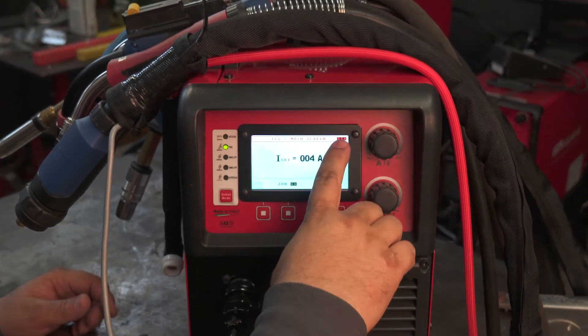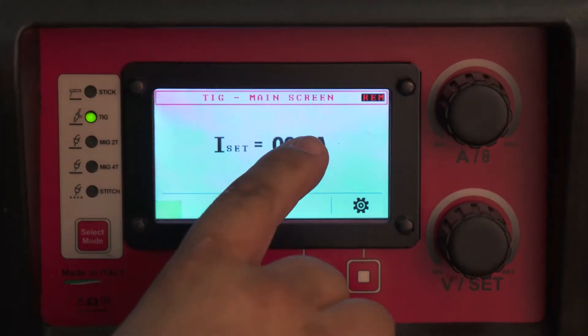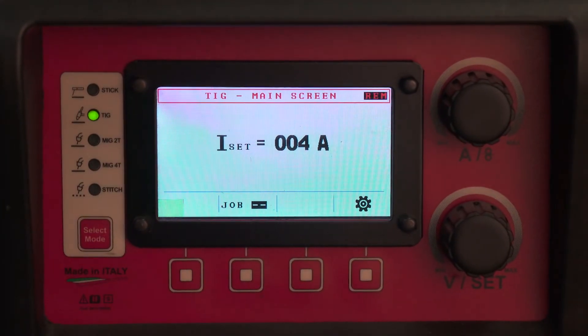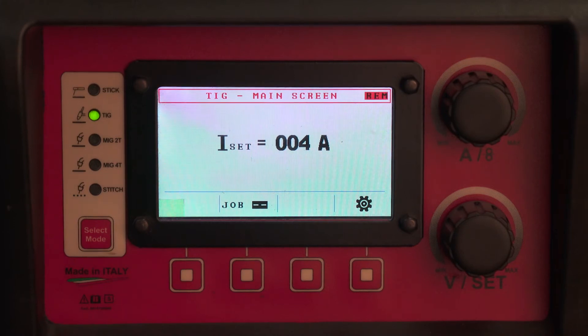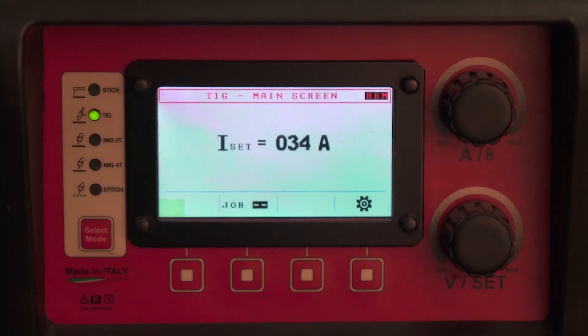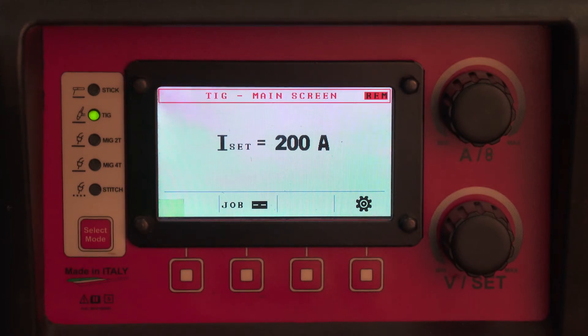You will see the remote control indicator lit up, and the amperage drop to 4 amps. That is your starting amps. As you step on the pedal, you can weld at whatever amperage all the way up to 200.